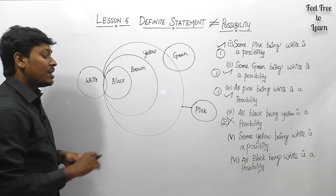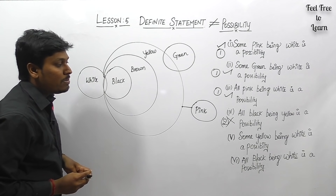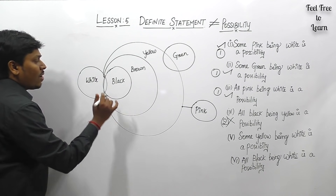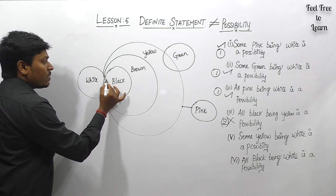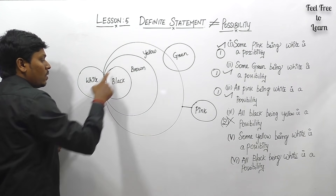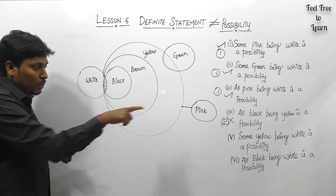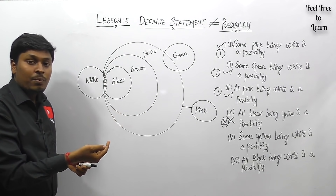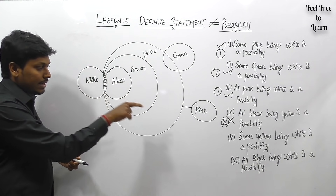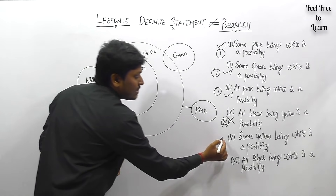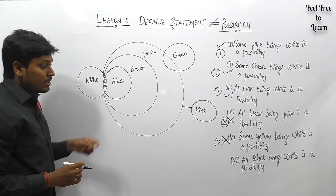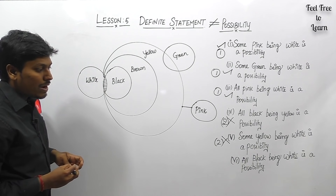Conclusion five: 'some yellow being white is a possibility.' In the statement itself, we already know some yellow are white. They are now asking this as a possibility — it is a definite statement. According to case number two, it does not follow and is wrong.